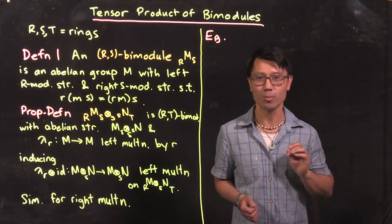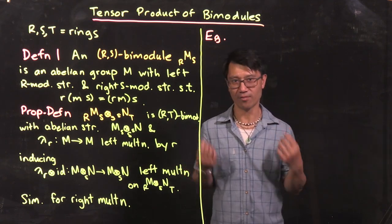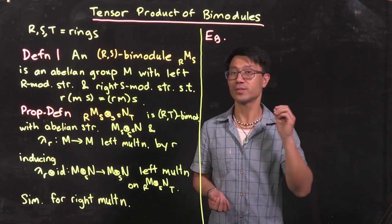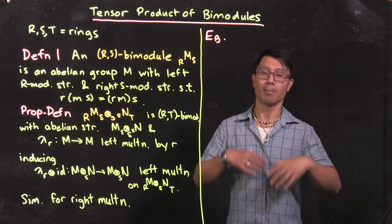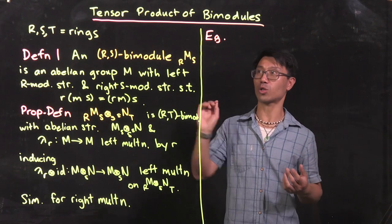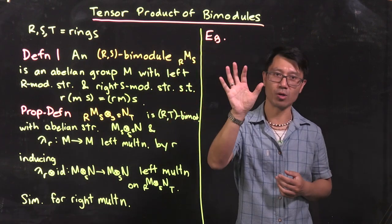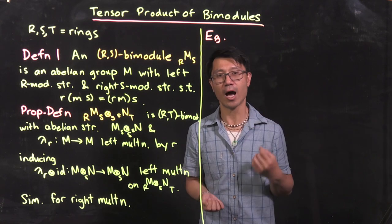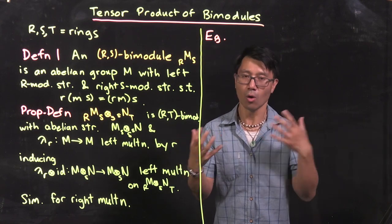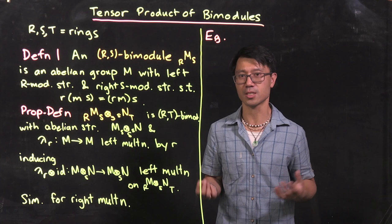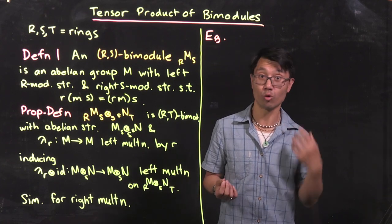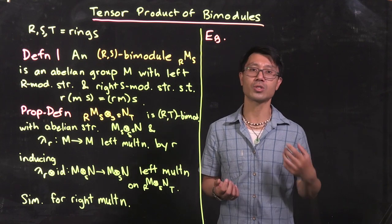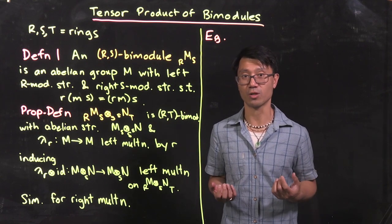Hi, I'm Daniel Chan from UNSW Sydney. Welcome to another adventure in pure mathematics. In the previous video, we looked at the notion of tensor products of modules. But the theory really comes alive when we talk about tensor products of bimodules. In this setting, we can look at new objects such as induction in group representations, reduction modulo p in number theory, and localization in commutative algebra.